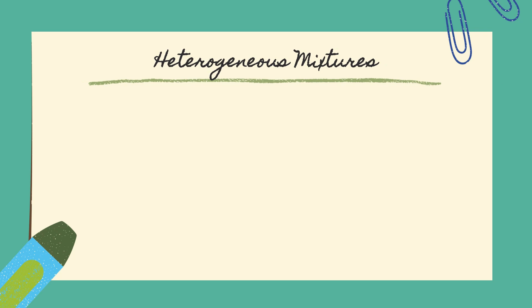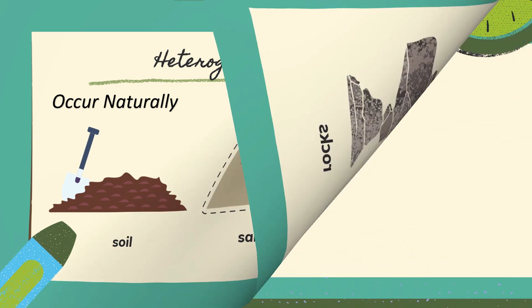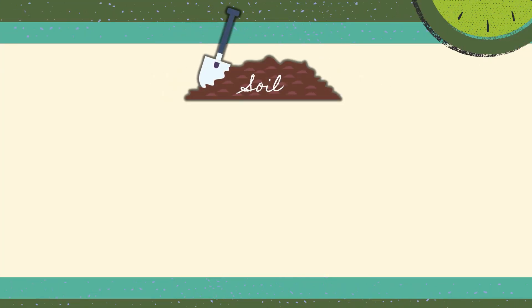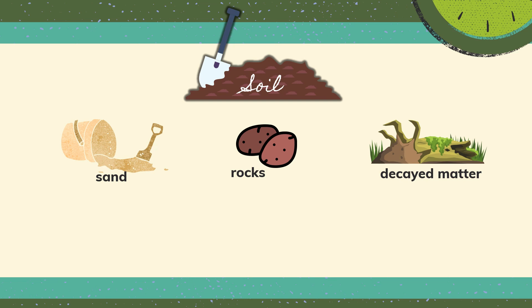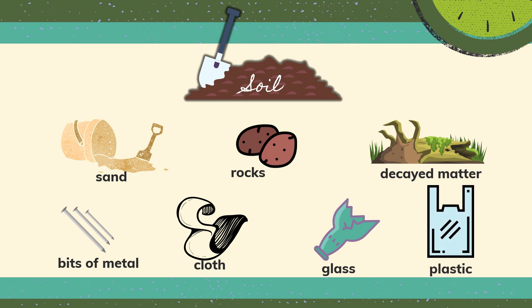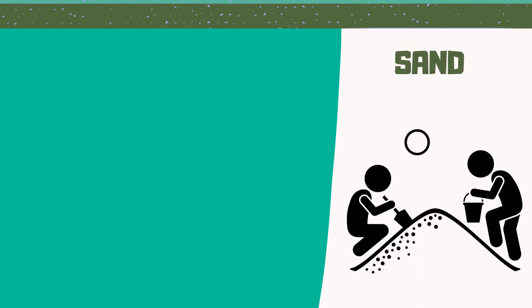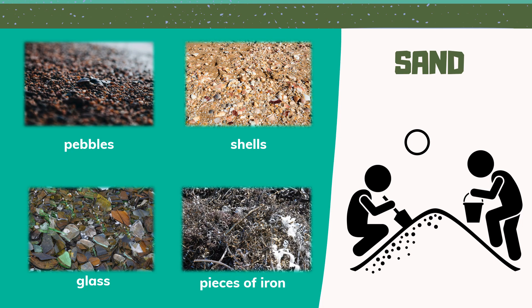There are many heterogeneous mixtures that occur naturally. Some of them are soil, sand, and rocks. Soil is a mixture of sand, rocks, and decayed matter — sometimes bits of metal, cloth, glass, and plastic could be found mixed in soil. Sand is also an example of a heterogeneous mixture; aside from very fine grains of sand, a scoop of sand may contain pebbles, bits of shells, glass, and pieces of iron.